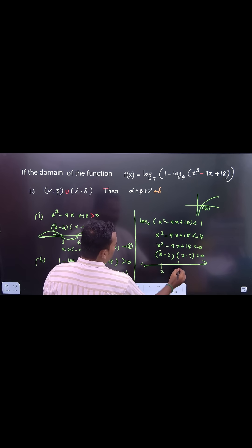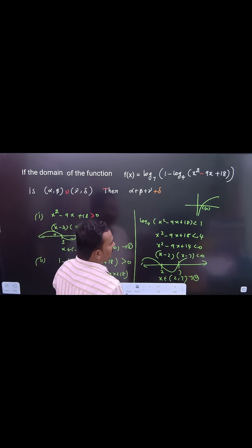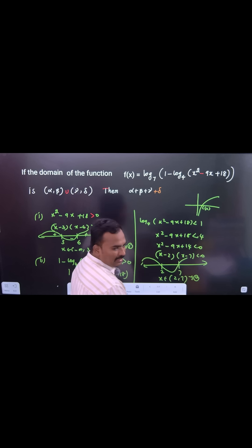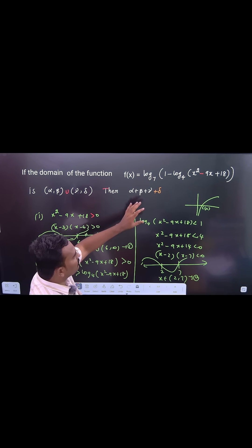2 and 7, then this is your value, right? x belongs to (2, 7). This is second one, right? And then you can combine these two things. Intersection you have to take. We need both conditions are required.